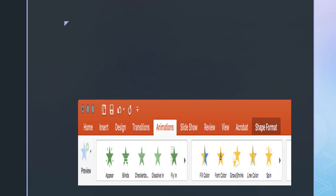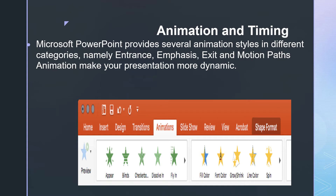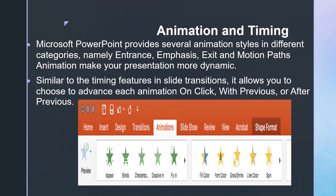Advanced techniques in PowerPoint include animation and timing. Microsoft PowerPoint provides several animation styles in different categories: namely, the entrance, emphasis, exit, and motion paths. Animation makes your presentation more dynamic. Similar to the timing features in slide transitions, it allows you to choose to advance each animation on-click, with previous, or after previous. Just click the animation tab and all the designs will appear.